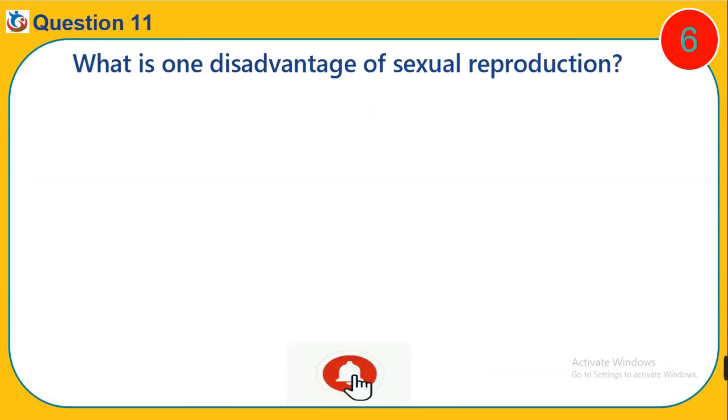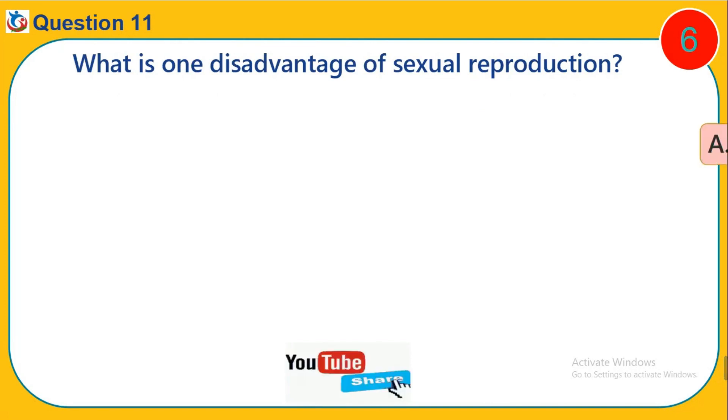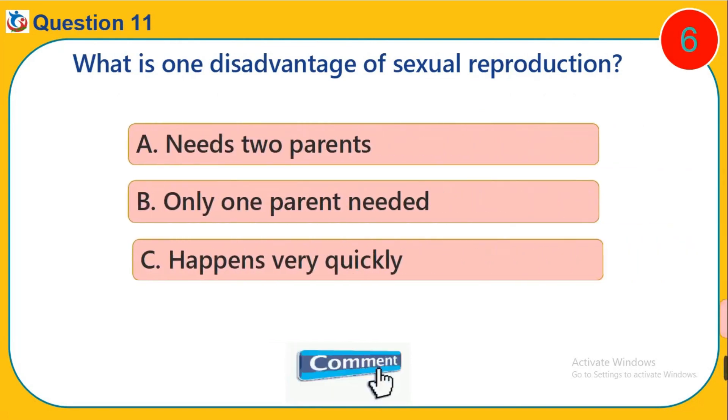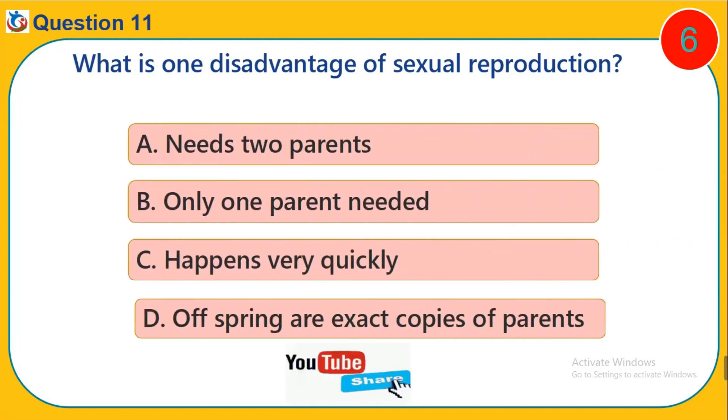Question 11. What is one disadvantage of sexual reproduction? A. Needs two parents.